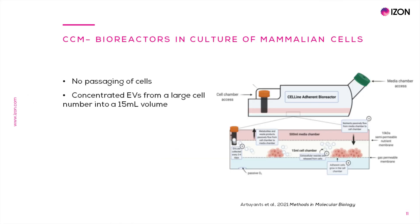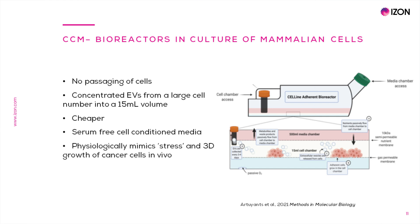Another option for EV production is to grow cells in bioreactors or high-density systems. This bioreactor, for example, has two chambers: a top chamber for nutrient media separated from a bottom chamber for cells to grow on a support membrane. The separation between chambers is done using a 10 kilodalton membrane that allows nutrients to pass through but not EVs, so EVs released by cells are retained in this compartment. Advantages of using bioreactors include no subculturing every two to four days, making it cheaper in terms of plasticware and labor. Also, released EVs are already concentrated in a very small volume, and high-density systems often do not use FBS. Finally, the use of a 3D cell growth structure better mimics cancer cells in vivo.